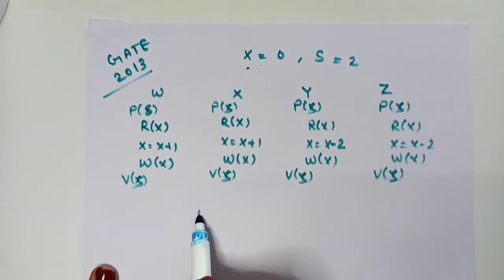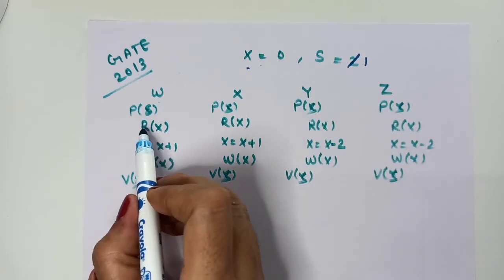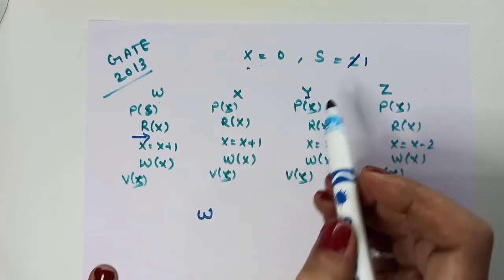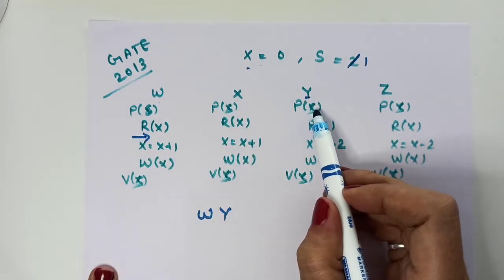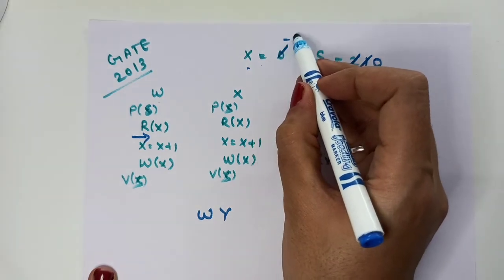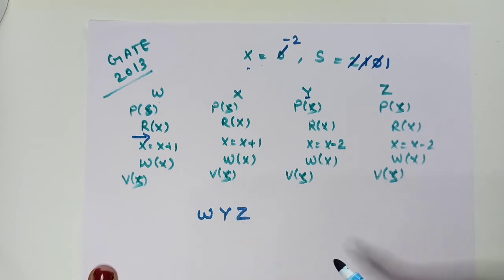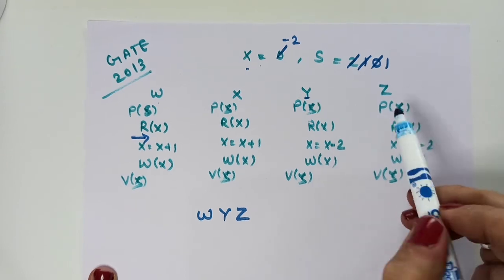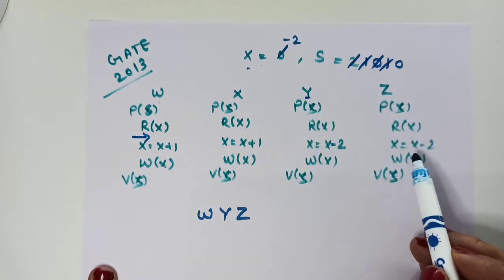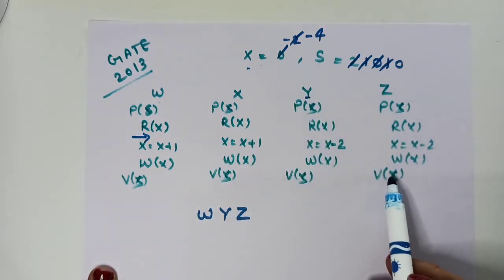Let's start solving. W begins: P(s) decrements s from 2 to 1, reads x=0. Then context switching happens — W has read x but not yet written it back. Now Y executes: P(s) decrements s from 1 to 0, reads x=0, decrements by 2 to get -2, writes x=-2. Then Z executes: P(s) decrements s to -1, reads x=-2, decrements by 2 to get -4, writes x=-4.